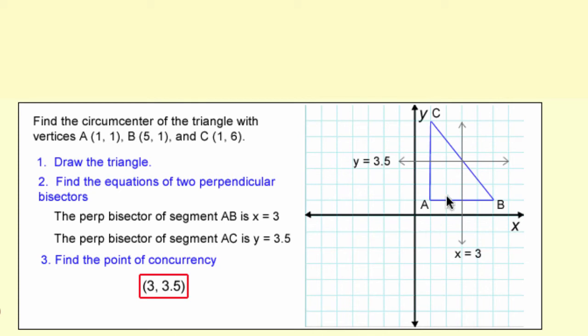What you do is find the equation of at least two perpendicular bisectors of the sides of the triangle. Where those two meet, that's where the circumcenter must be.